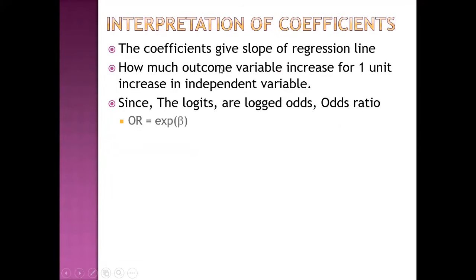The coefficient gives the slope of the regression line — that is, how much the outcome variable increases for one unit increase in the independent variable. Since the logits are log odds ratios, the odds ratio can be calculated as the exponential of the coefficient.